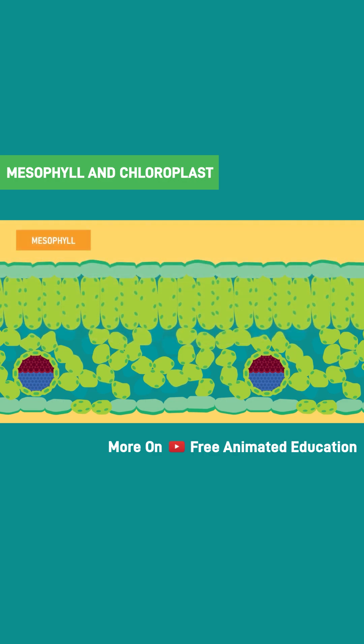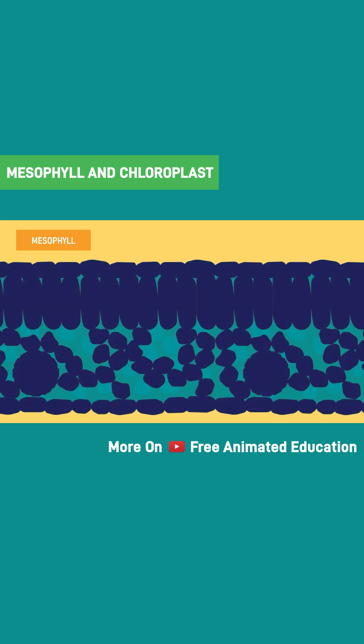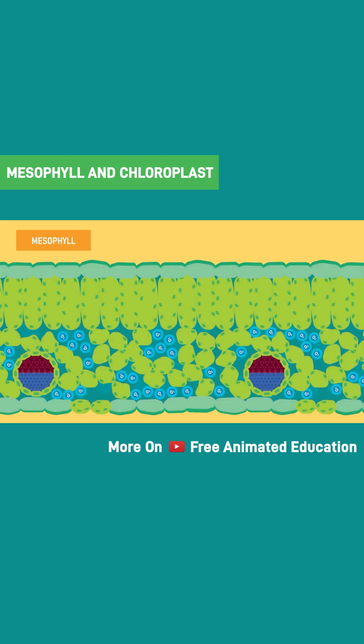In contrast, spongy mesophyll are loosely arranged cells below the palisade parenchyma. The spongy mesophyll have air spaces among them, which allows gaseous exchange between the outer environment and leaf.